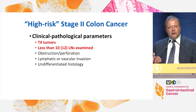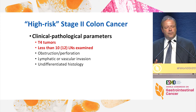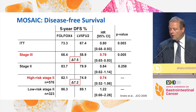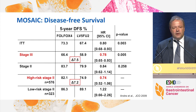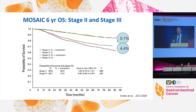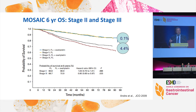Secondary prognostic factors include obstruction, perforation, lymphovascular invasion, and undifferentiated histology. The most important ones are T4 stage and number of lymph nodes resected. When you look at the effect of oxaliplatin-based therapy on disease-free survival, the delta for high-risk stage two patients at five years was 7.2 percent — very similar to stage three at 7.5 percent. However, oxaliplatin-based therapy did not translate into any improvement in overall survival, even in high-risk stage two patients.